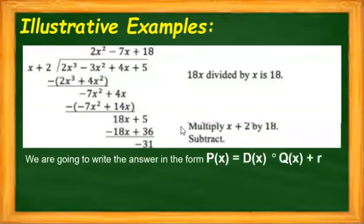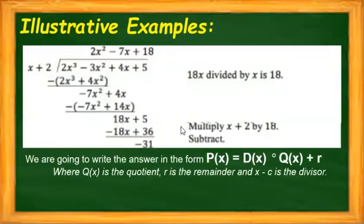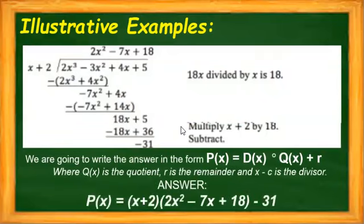So what will be now our quotient? We are going to write the answer in the form P of x, or the polynomial. Our P of x is equal to D of x, the divisor, times Q of x, the quotient, plus the remainder. This will be our final answer for this example. So P of x equals x plus 2, since that's our divisor, and the answer we got on top is our quotient. So it will be 2x squared minus 7x plus 18. And don't forget our remainder. It's negative 31 or minus 31 because the remainder we got was negative 31.